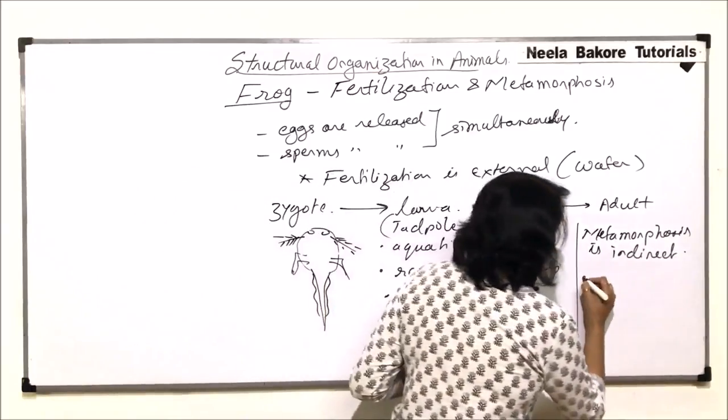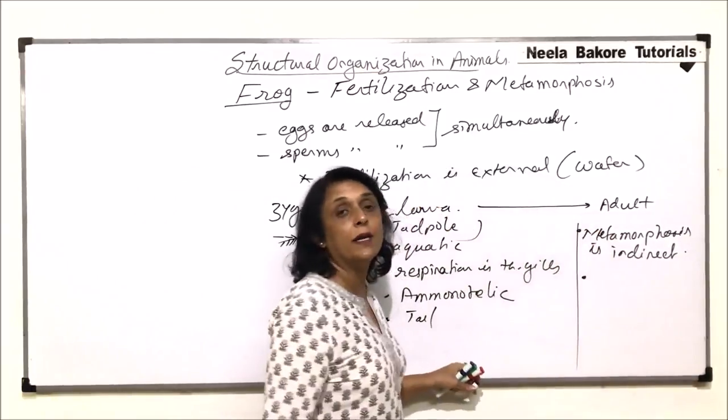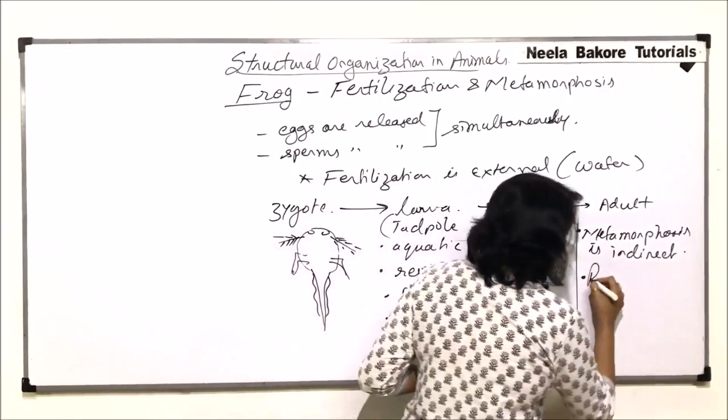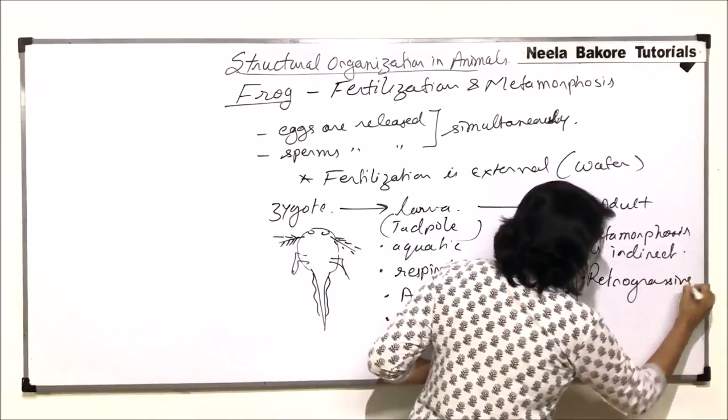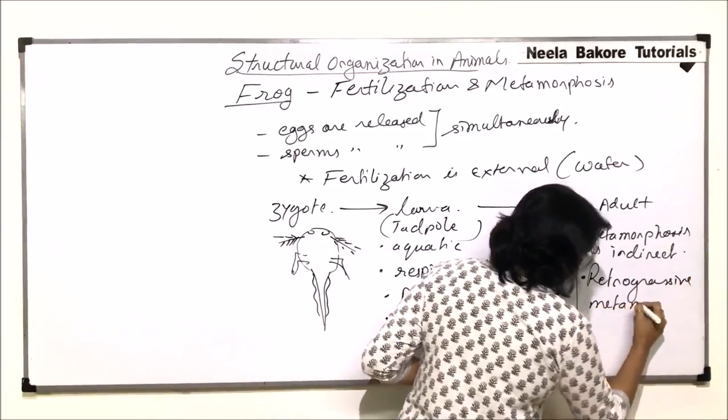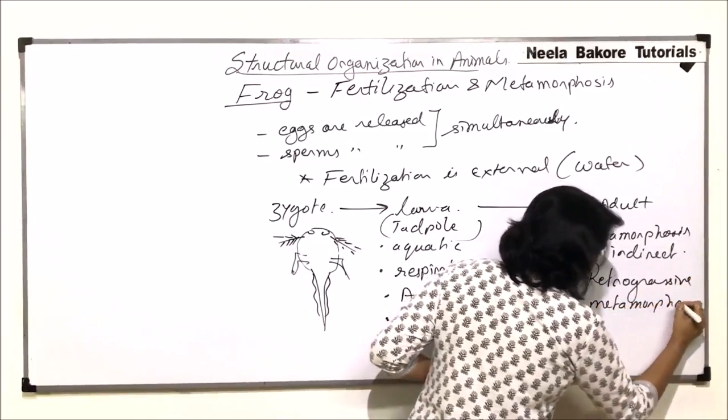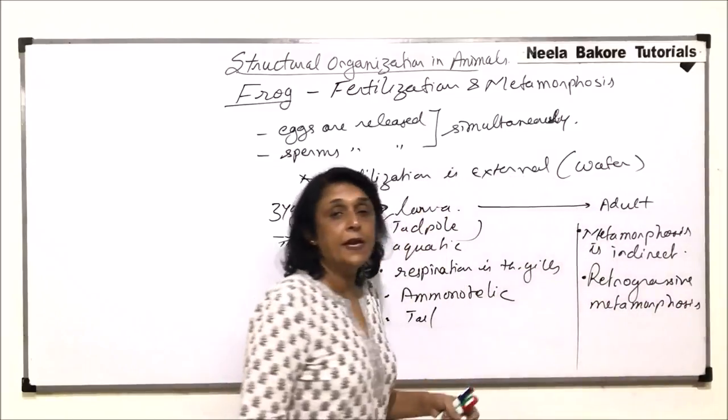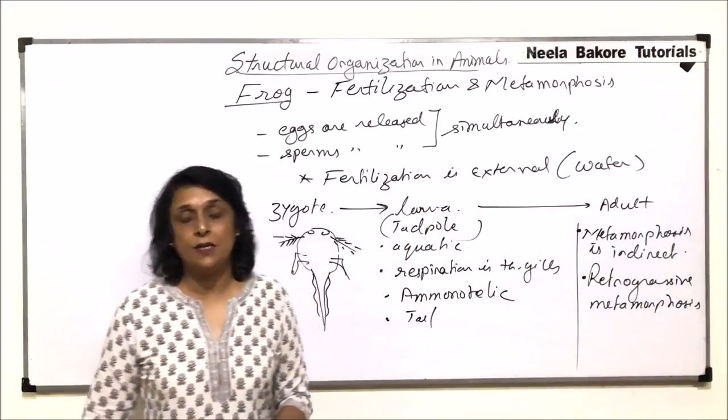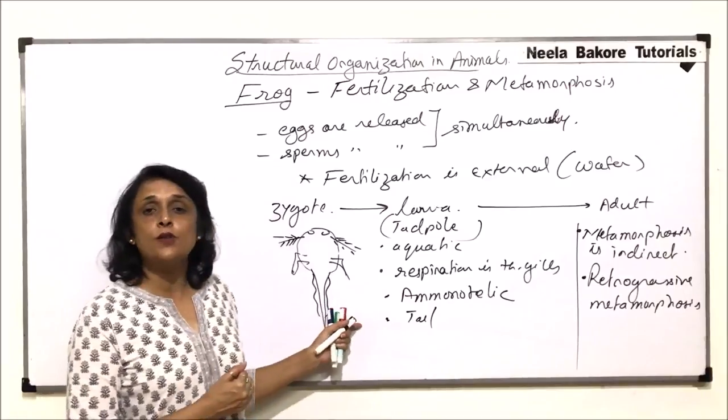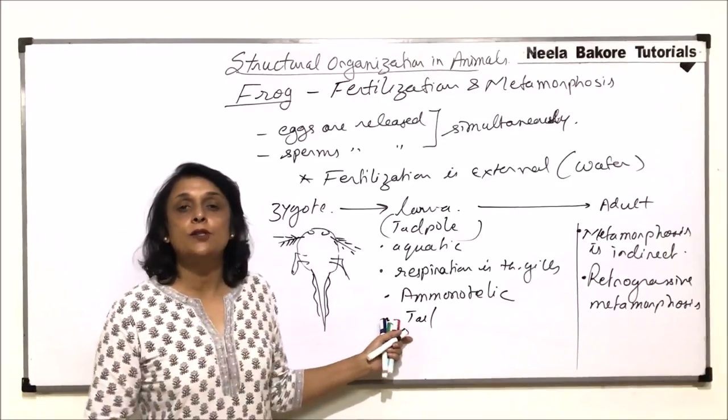Plus, we would add one more term in case of this metamorphosis. It is called retrogressive metamorphosis. Normally, whenever we talk of metamorphosis, it includes progressive changes. That means from a simpler structure, a more complex structure develops.